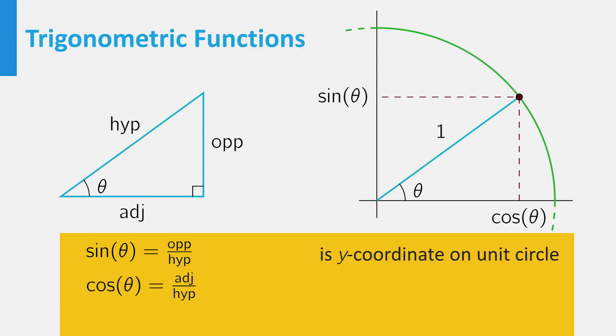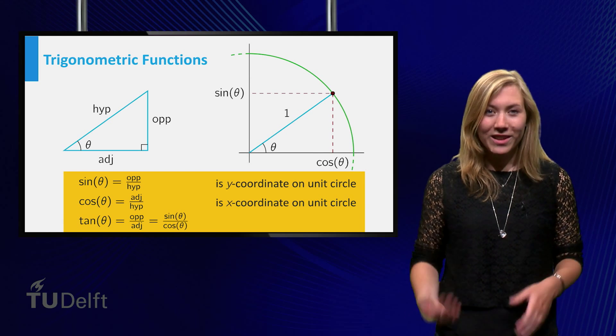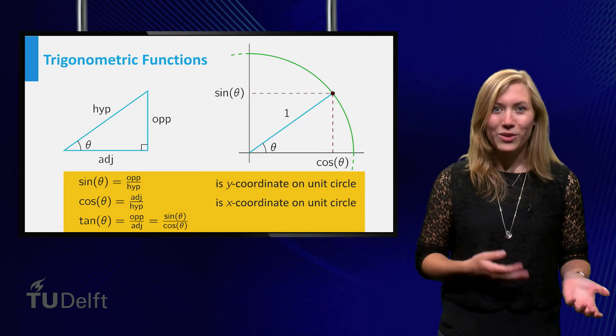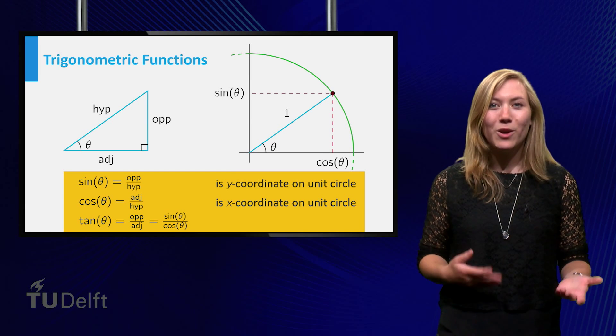The cosine equals the adjacent side over the hypotenuse, or the x-coordinate in the unit circle. The tangent function is equal to the opposite side divided by the adjacent side, and thus satisfies the relation tangent of theta equals sine of theta divided by cosine of theta.